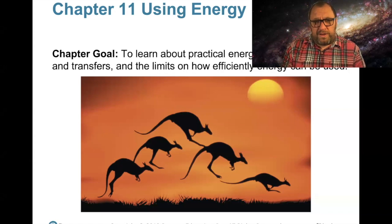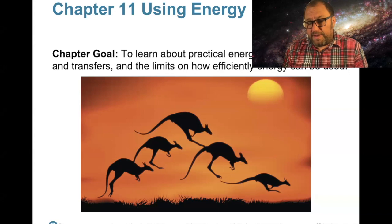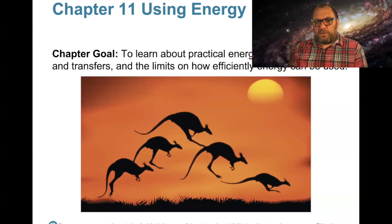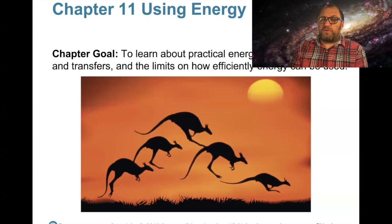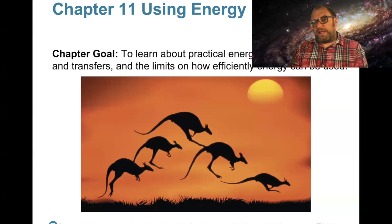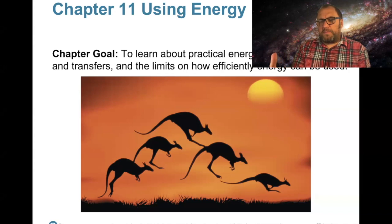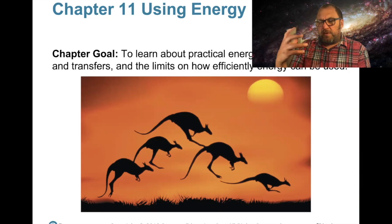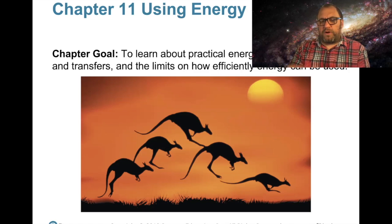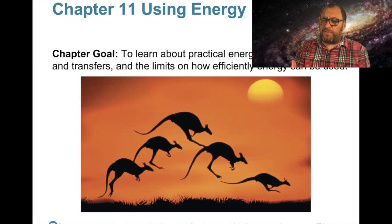Welcome to Physics One, Chapter 11. We're going to be talking about using energy. This chapter is all about how energy can be converted to different forms and also used by biological systems. When you run or exercise, how much of that energy can you actually use? How much chemical energy can you turn into useful mechanical energy? We'll use what we know from Chapter 10 to calculate work and see how much energy it takes for a biological entity to do that work.